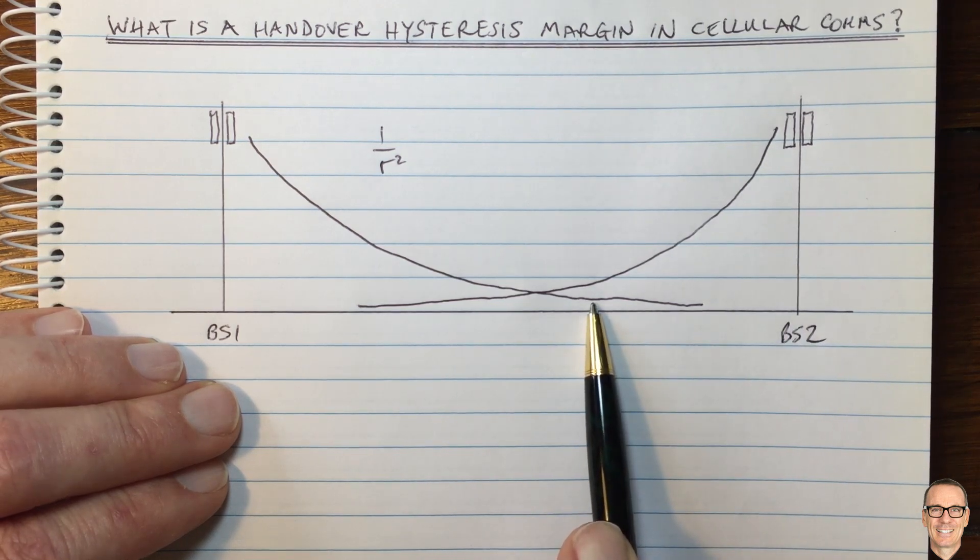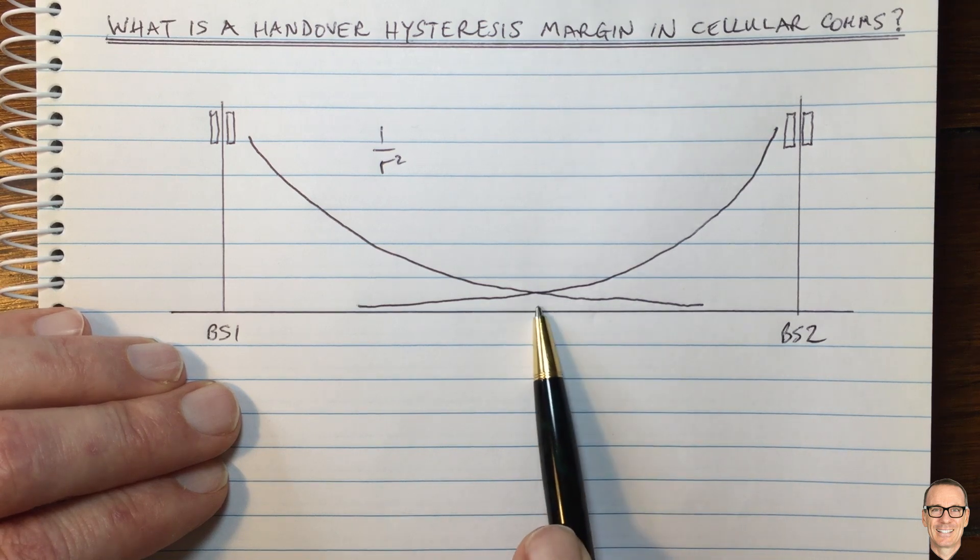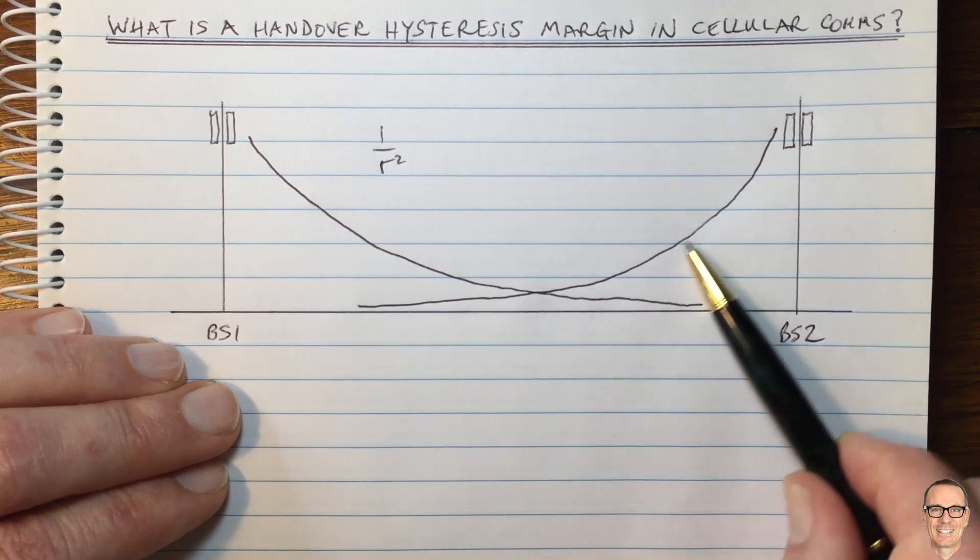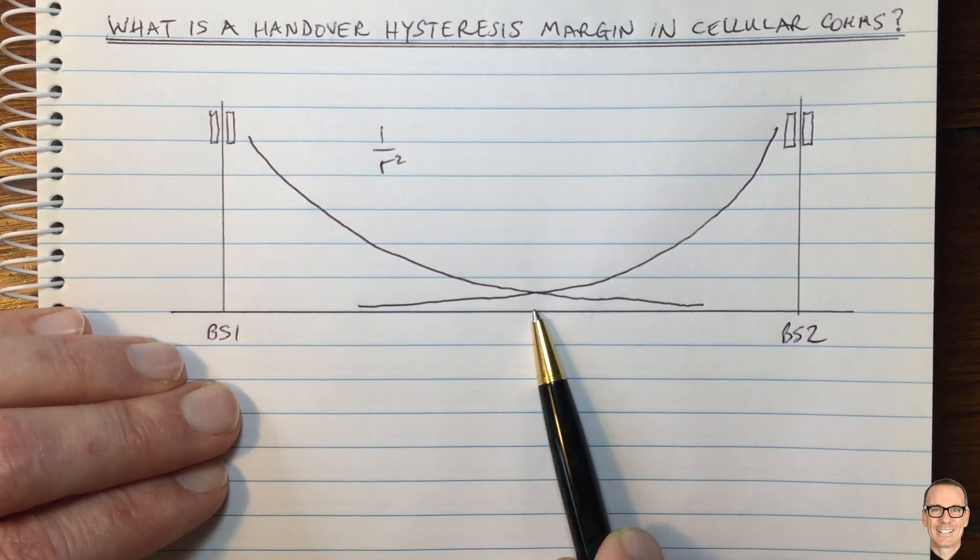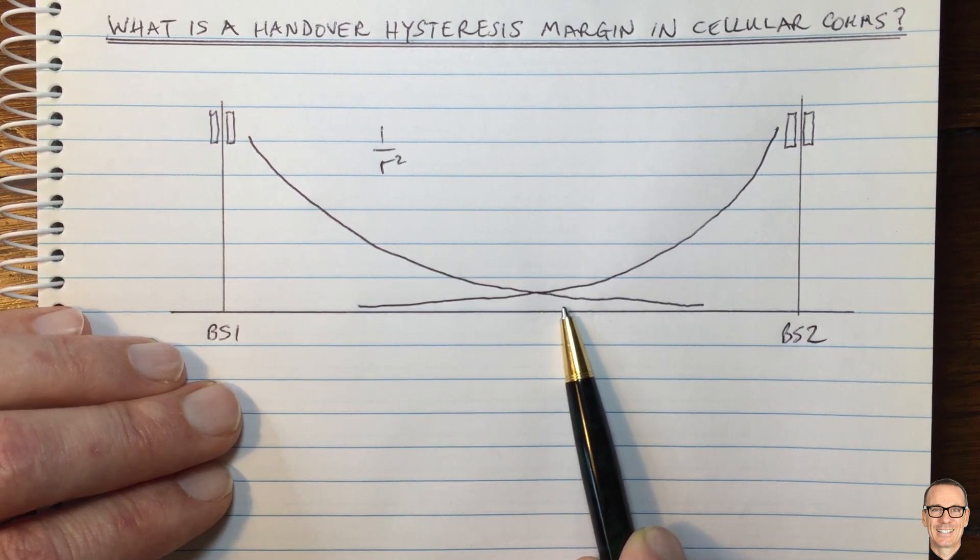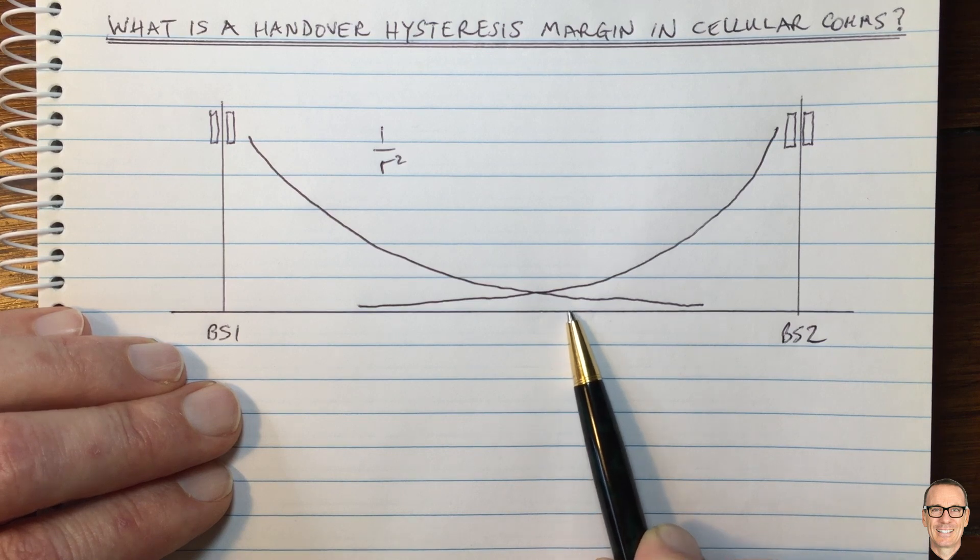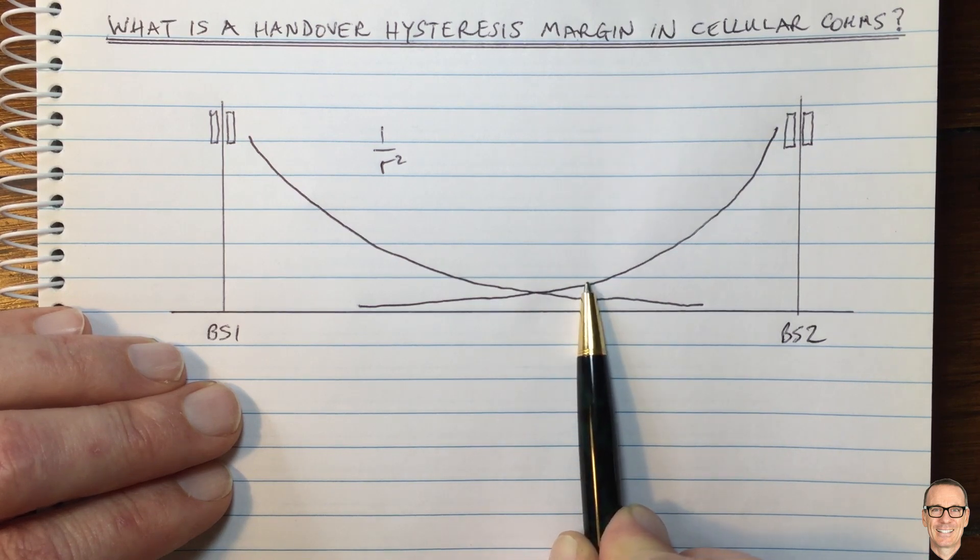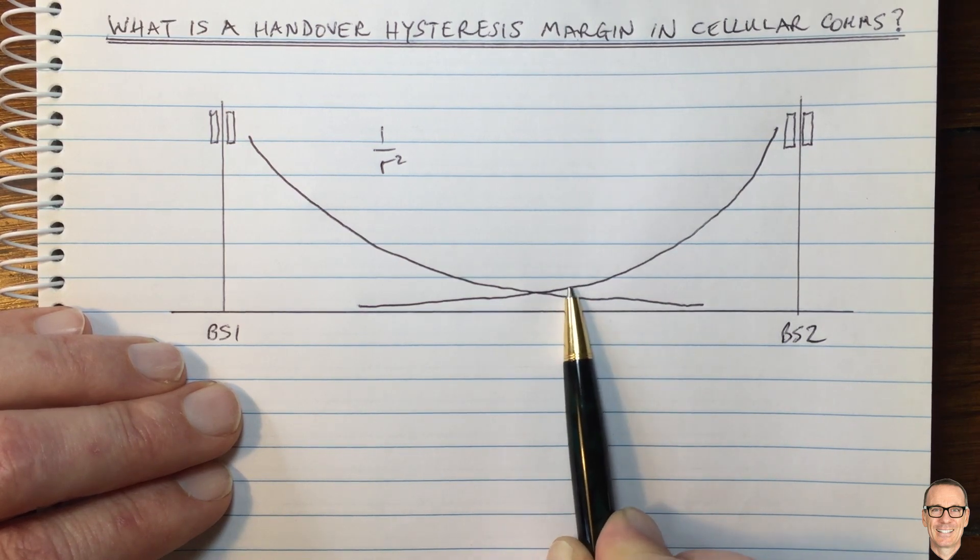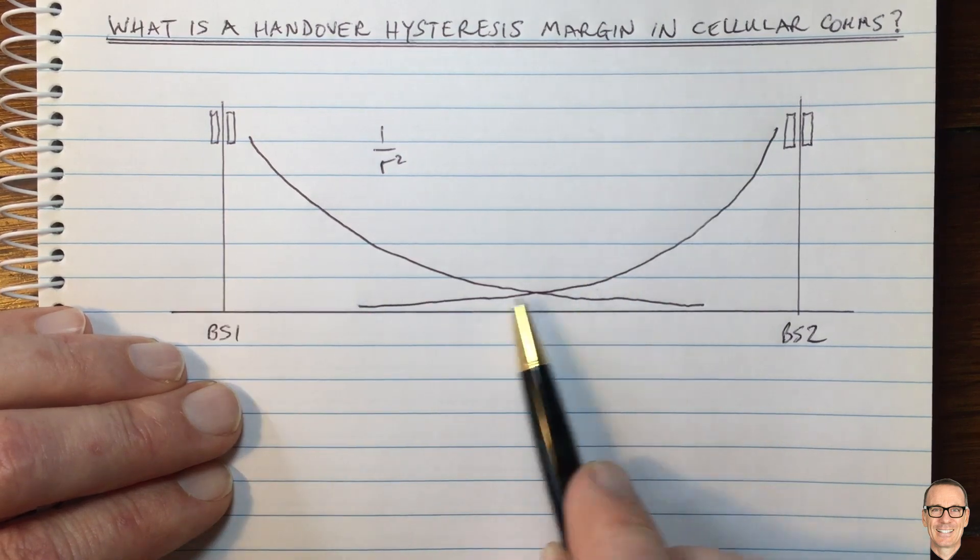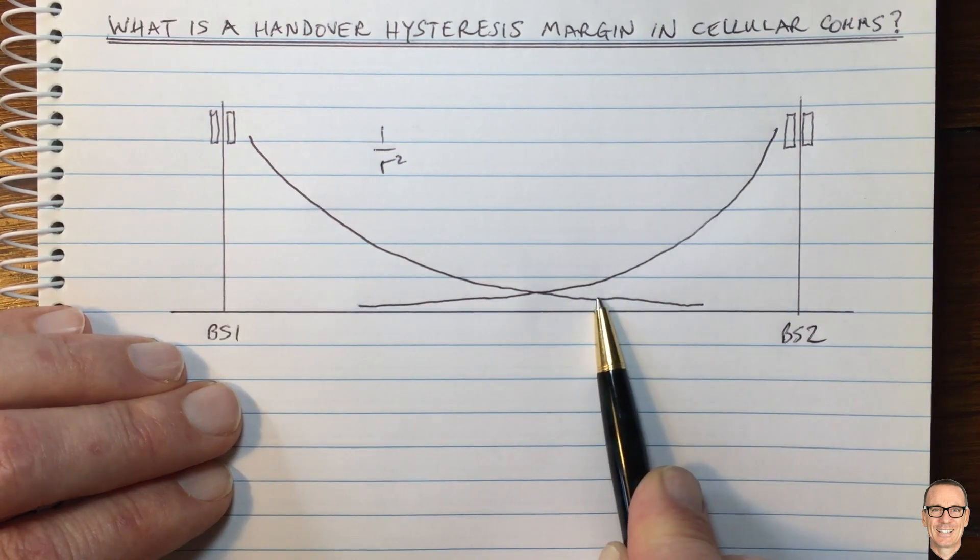And one of the reasons is that in practice, you have fading channels. So it's not as simple as this. And so as you're moving around, you might be going closer to a building or behind a building, or there might be movement that creates multipath interference, and the signal may be going up and down. So if you suddenly change when you get a higher value of signal, it might be that through time varying fading channels, it might be that that switches back to the other base station and back and forth and back and forth. We call this a ping pong effect.